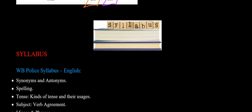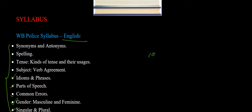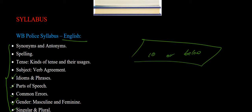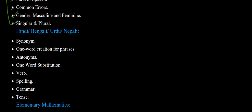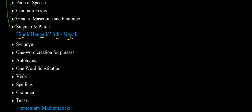Now let us look at the syllabus. For English, the topics include synonyms and antonyms, spellings, tenses, idioms and phrases, parts of speech, common errors, gender (masculine/feminine), and singular or plural. These are basic topics studied in class 10 or below, which is why the eligibility is only matriculation pass. For the language section, candidates can choose from Hindi, Bengali, Urdu, or Nepali.